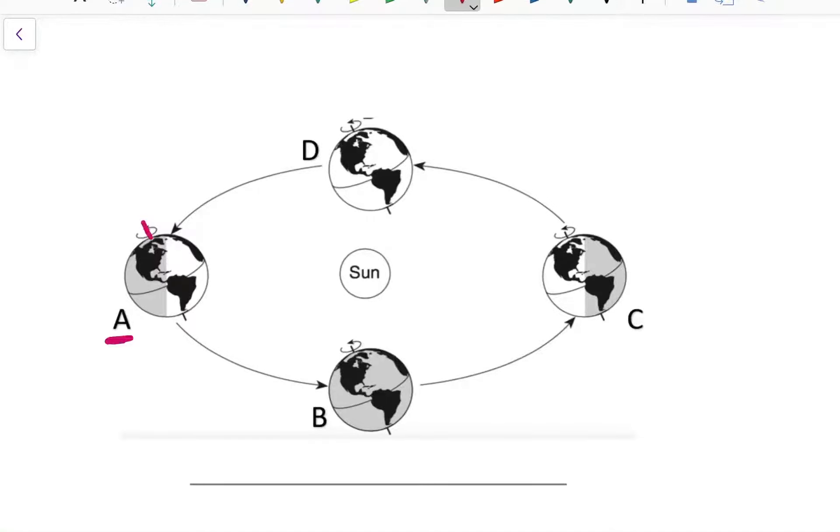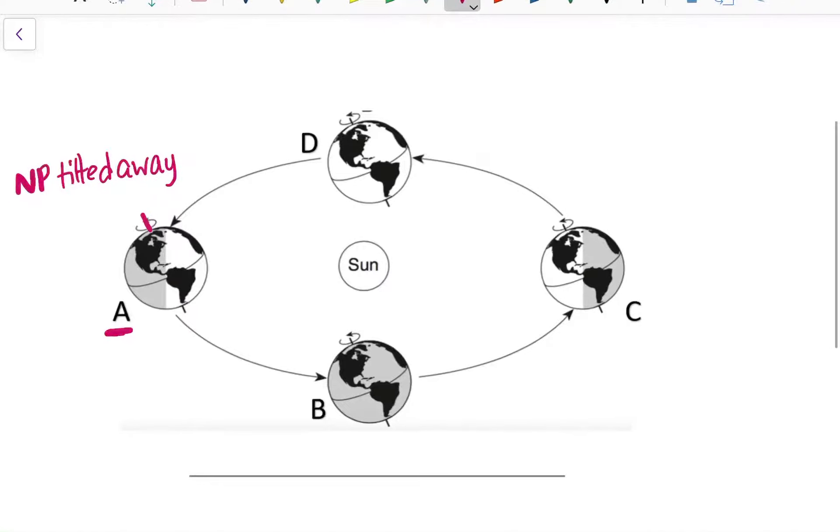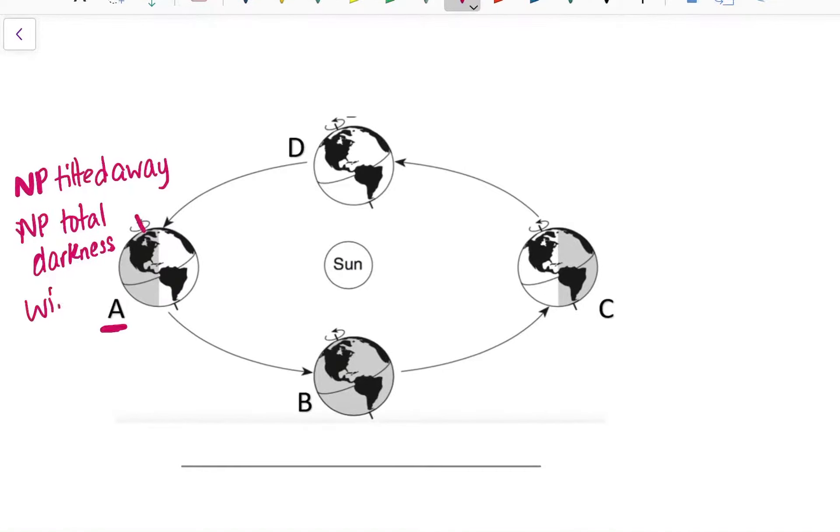So let's write this down near position A. We're going to write North Pole tilted away and total darkness. So because the North Pole is tilted away and the North Pole is in total darkness, we now know this must be winter.